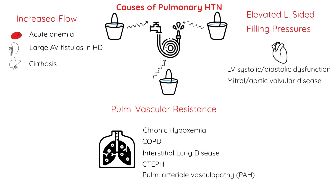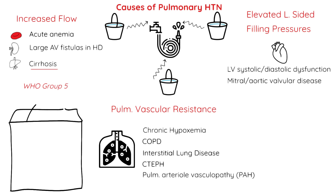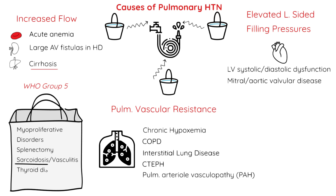One important caveat is that not every patient fits neatly into just one of these three pathophysiologic buckets. For example, patients with cirrhosis may have low systemic vascular resistance, which increases flow, but they can also have elevated resistance from portopulmonary hypertension. There's also a grab bag of rarer causes from WHO group 5, including hematologic disorders like myeloproliferative disease, and systemic disorders like sarcoidosis, vasculitis, and thyroid disorders.